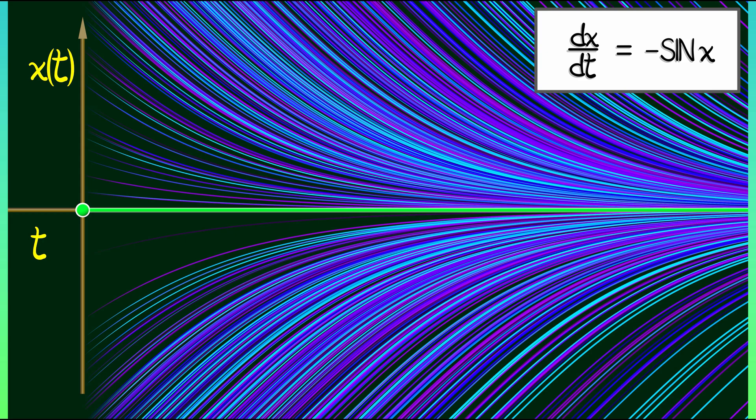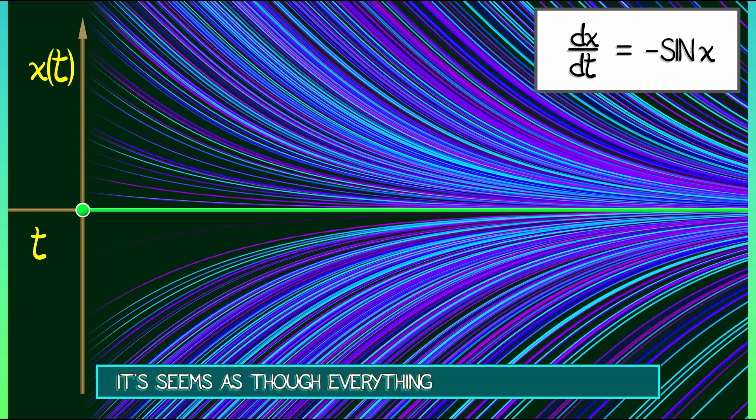And likewise, when x is negative, it starts off below zero. Because sine of x is negative, throw a minus sign in there. dx/dt is positive. That means that x is increasing as a function of time. And what you can observe, either through qualitative reasoning or through looking at the pictures, is that it seems like all these solutions are converging to zero. They are converging to this equilibrium. That's very interesting.